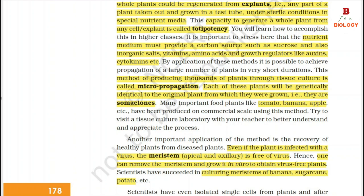Each of these plants will be genetically identical to the original plant from which they were grown — they are somaclones. Many important food plants like tomato, banana, apple, etc. have been produced on a commercial scale using this method. Try to visit a tissue culture laboratory with your teacher to better understand and appreciate the process.